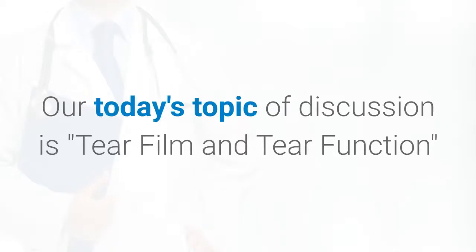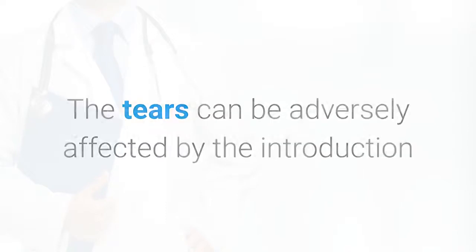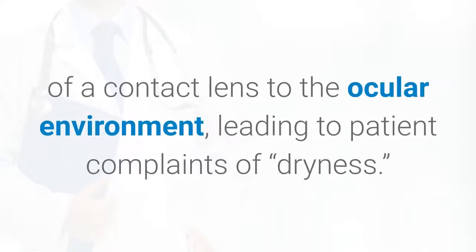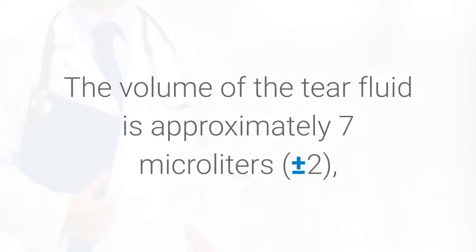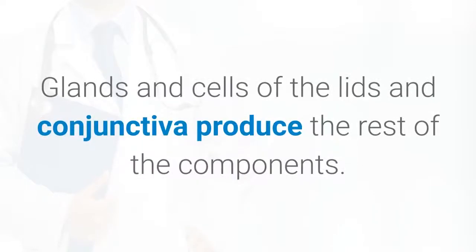Our today's topic of discussion is tear film and tear function. The tears can be adversely affected by the introduction of a contact lens to the ocular environment, leading to patient complaints of dryness. The volume of the tear fluid is approximately 7 microliters plus or minus 2, with 95% of the volume being produced by the lacrimal gland. Glands and cells of the lids and conjunctiva produce the rest of the components.